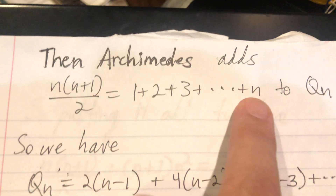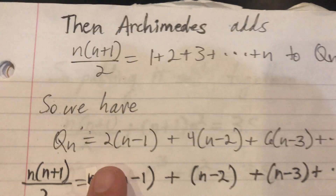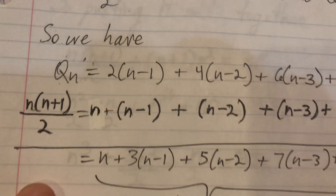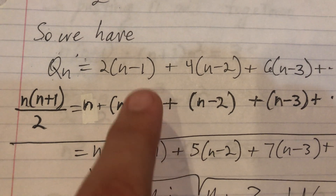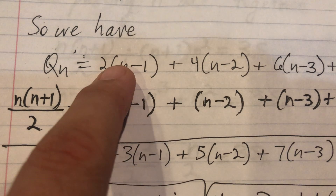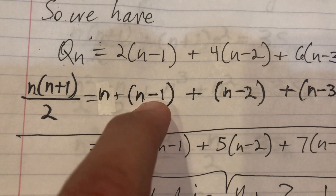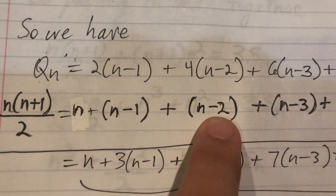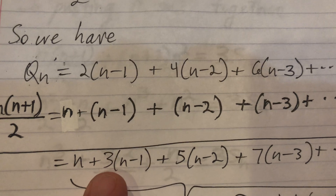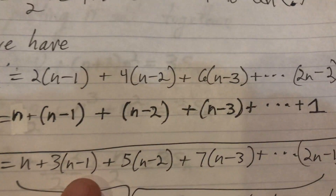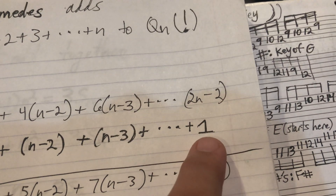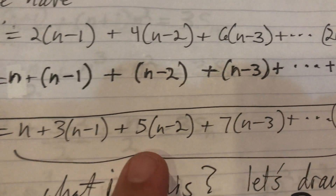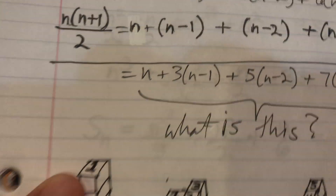So Archimedes added the Gauss sum to Q sub n — the thing we didn't know what to do with. Here's Q sub n from when we multiplied it out, and we're going to add them up. We have n, then two times n minus one plus n minus one gives three of these n minus ones, then four times n minus two plus n minus two gives five of these n minus twos — so the coefficients are three, five, seven — all the odd numbers. Finally, we have two n minus two plus one, giving two n minus one in that column.